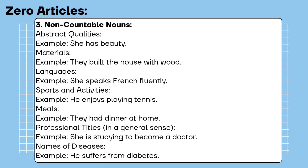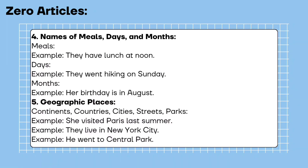Professional titles in a general sense. Example: she is studying to become a doctor. Names of diseases. Example: he suffers from diabetes. Names of meals, days, and months — meals. Example: they have lunch at noon. Days. Example: they went hiking on Sunday. Months. Example: her birthday is in August.